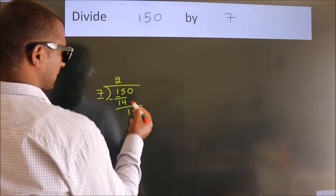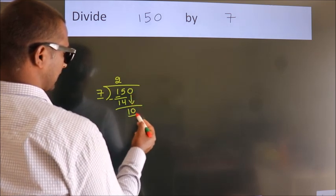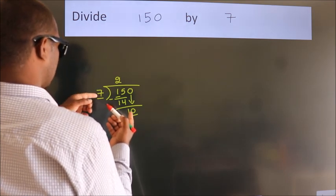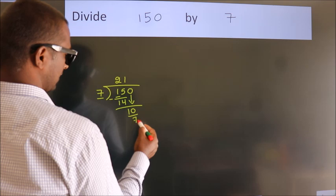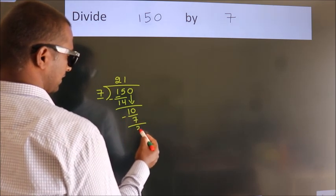After this, bring down the beside number. So 0 down, giving us 10. A number close to 10 in the 7 table is 7 ones, 7. Now we subtract and get 3.